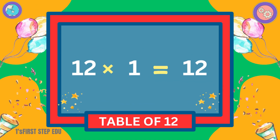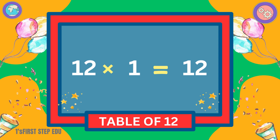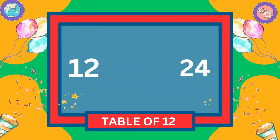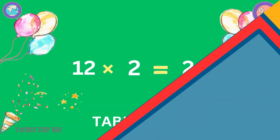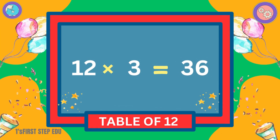Table of 12. 12 ones are 12. 12 twos are 24. 12 threes are 36.